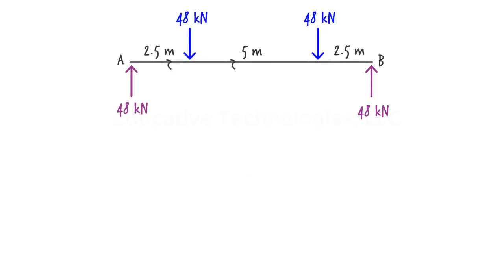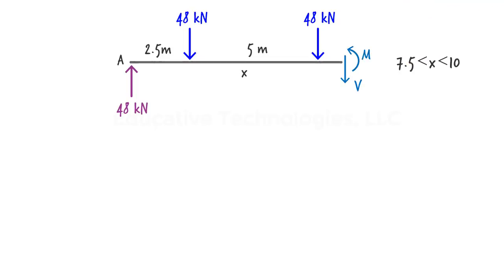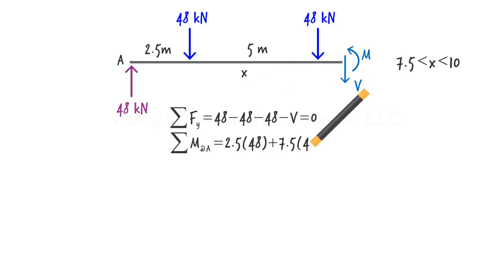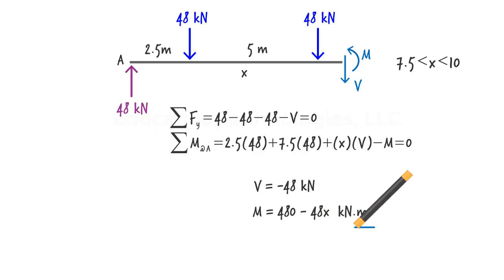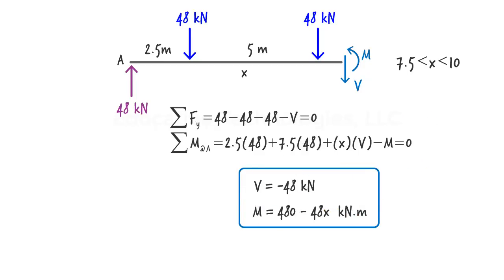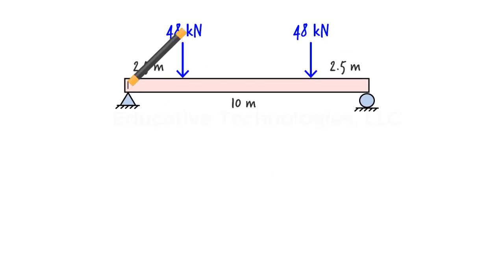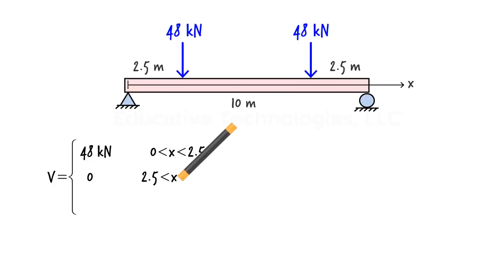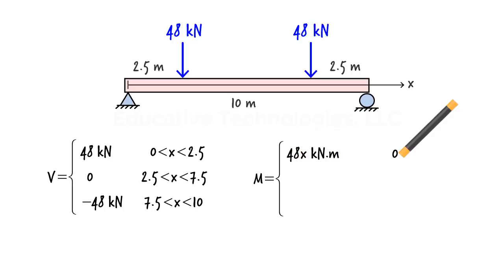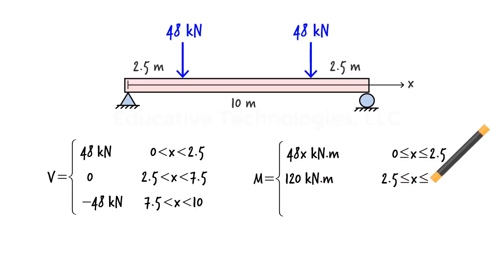Finally, for the right segment, we cut the beam at some distance x from the origin where x is between 7.5 and 10. We write the equilibrium equations and solve for v and m. In summary, since the concentrated loads divide the beam into three segments, we express shear and bending moment in a piecewise manner using three equations.